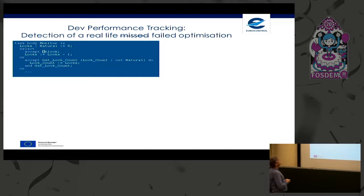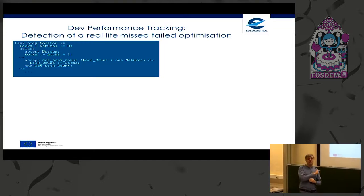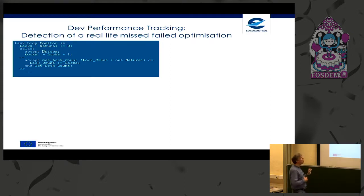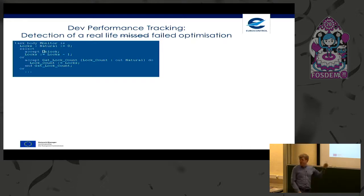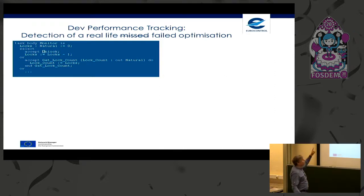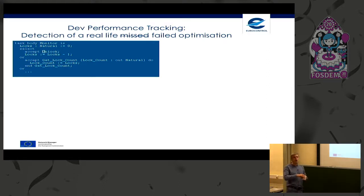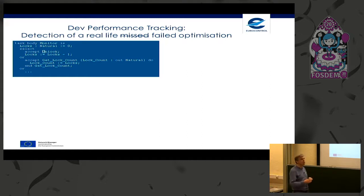An interesting case: we want to avoid performance degradation but also want to verify that what we believe is an optimization actually is an optimization. This is a real-life example of a failed optimization. This is the slide with a little bit of ADA code — I promised Jean-Pierre we would have some. We see code of an ADA task with two rendezvous. The task maintains automatic loading of data — synchronizing access and loading. It maintains a lock count, accepting 'unlock' rendezvous when a client releases a lock, and a 'get lock count' rendezvous returning the current count.